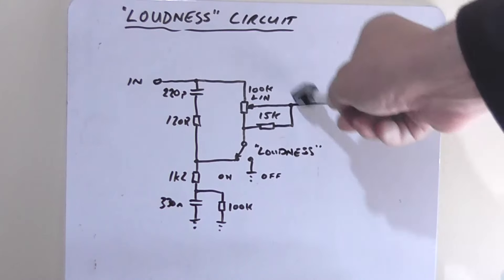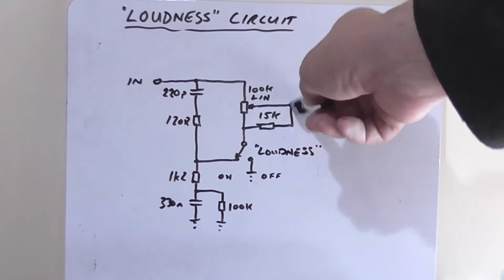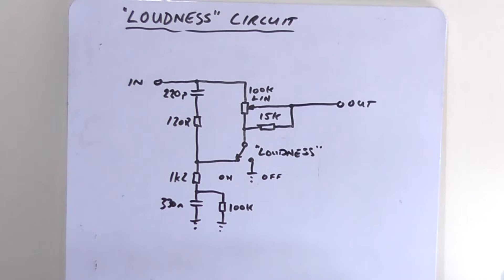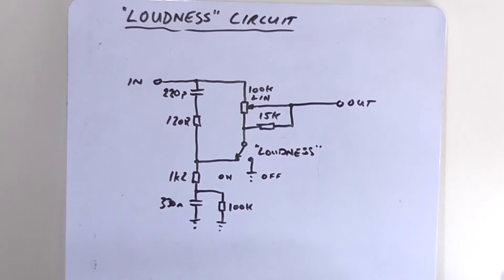The only reason I've used a linear pot here and a 15k load resistor, like a better volume control, is one, I wanted to test it, and two, it's all I had really to hand was a 100k linear pot. So that's just what it is.